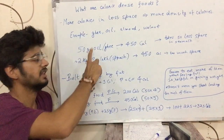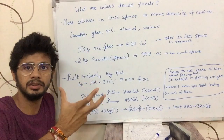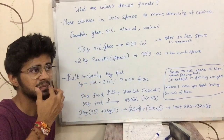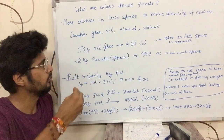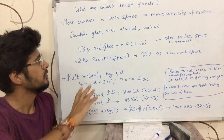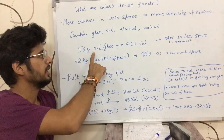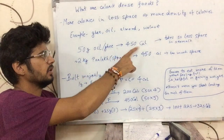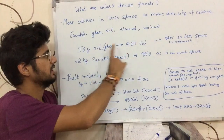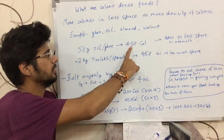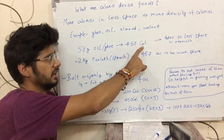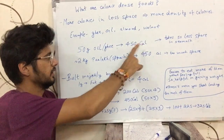Let me explain. If there are 50 grams of fat, in 1 gram of fat there are 9 calories. So in 50 grams of fat, there will be 450 calories.